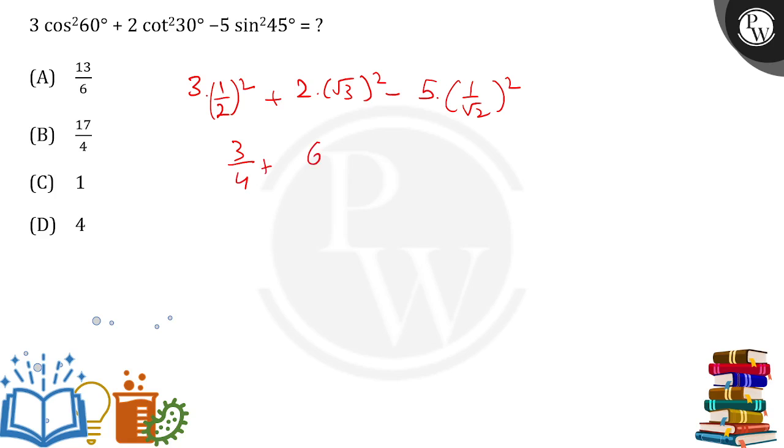2 into 3, that is 6, minus 5 upon 2. We have to take the common denominator as 4, so 3 plus 24 minus 5 into 2, so 24 minus 10, it will be 14.